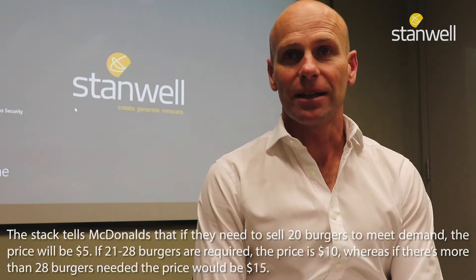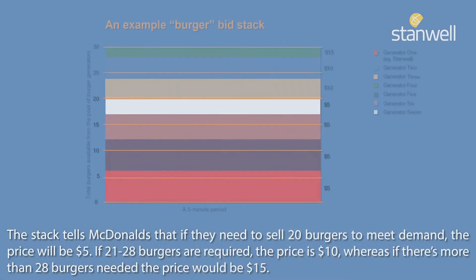The stack tells McDonald's that if they need to sell 20 burgers to meet demand, the price will be $5. If 21 to 28 burgers are required, the price is $10. Whereas if there are more than 28 burgers needed, the price will be $15.